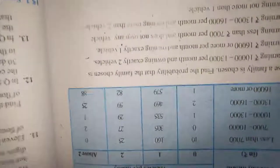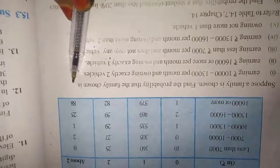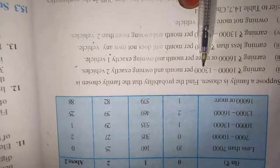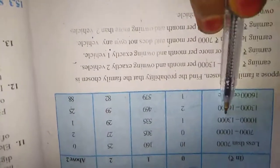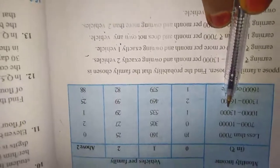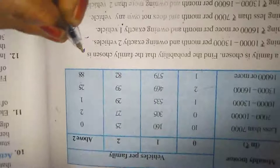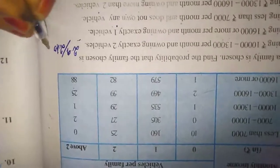Suppose a family is chosen. Find the probability that the family chosen is earning 10,000 to 13,000 per month and owning exactly two vehicles. So 10 to 13, exactly two vehicles means here it will come. If you refer 29, so 29 by total family is 2,400. 29 divided by 2,400.